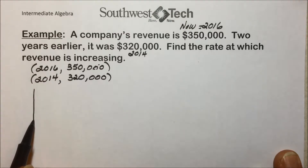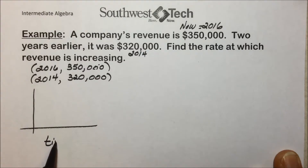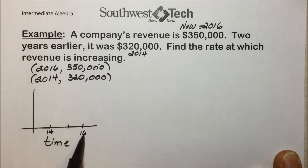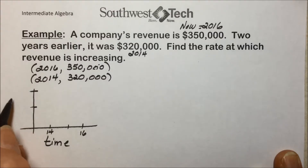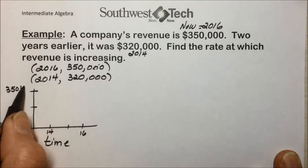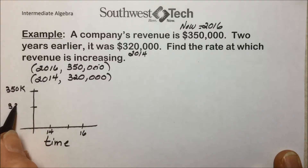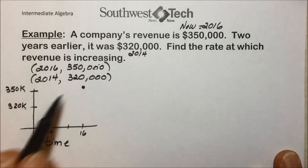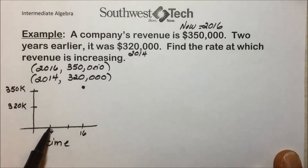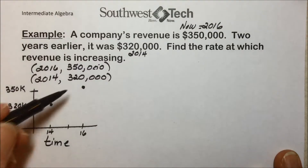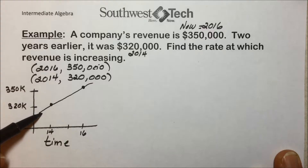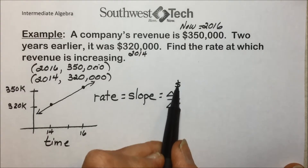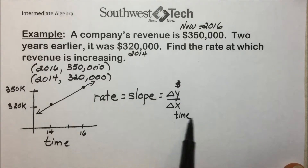If we were to graph these with time on the horizontal axis, we have 2014 and 2016. Plotting the points — 2016 with $350,000 and 2014 with $320,000 — they're asking for the rate of increase. Following this positive trend, we're looking at the steepness of this line, a rate we call slope.